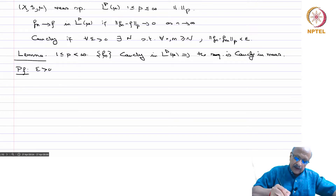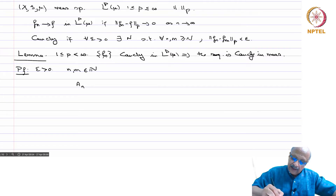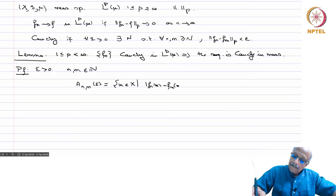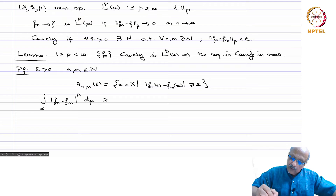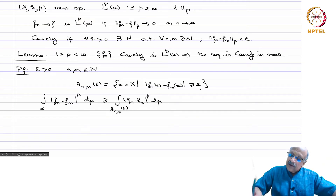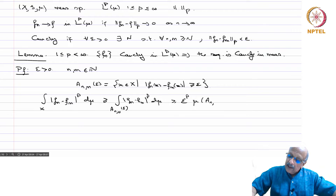Let epsilon > 0. For all n, m positive integers, we define A_{n,m,epsilon} as the set of all x in X such that |f_n(x) - f_m(x)| ≥ epsilon. Then the integral over X of |f_n - f_m|^p dmu is ≥ the integral over A_{n,m,epsilon} of |f_n - f_m|^p dmu, which is ≥ epsilon^p times mu(A_{n,m,epsilon}).